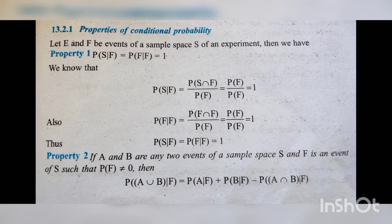Then we have the first property: P of S given F is equal to P of F given F, which is equal to 1. Here is the proof. We know that P of S given F is equal to P of S intersection F divided by P of F — this is the formula of conditional probability. Since S intersection F equals F, we get P of F divided by P of F, and P of F and P of F get cancelled, so the answer becomes 1.